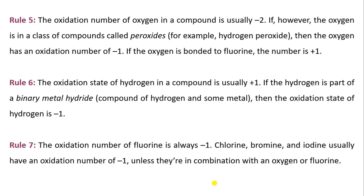Now rule 5. The oxidation number of oxygen in a compound is usually minus 2. If, however, the oxygen is in a class of compounds called peroxides, for example, hydrogen peroxide H2O2.